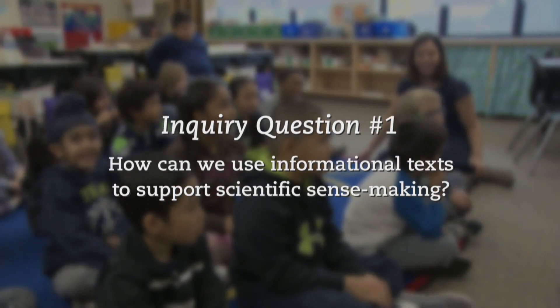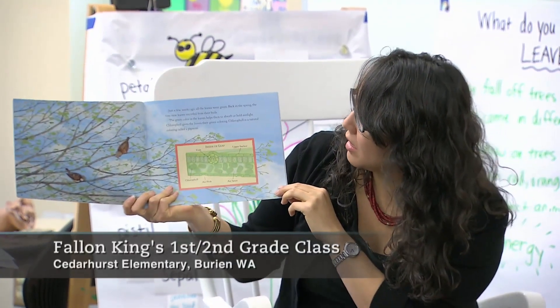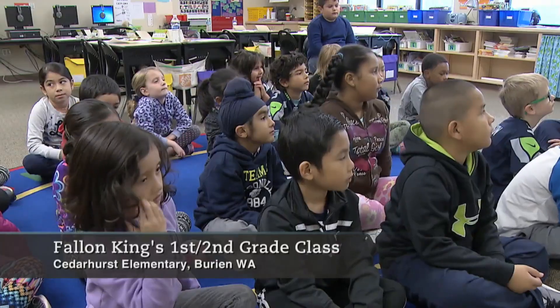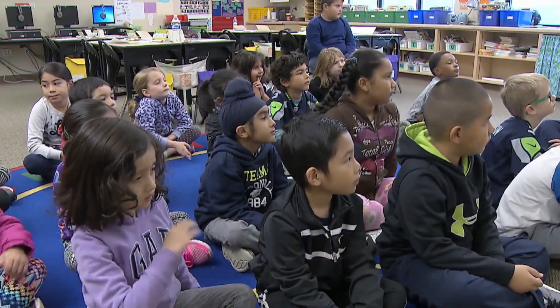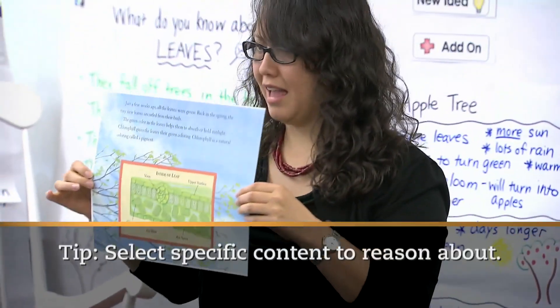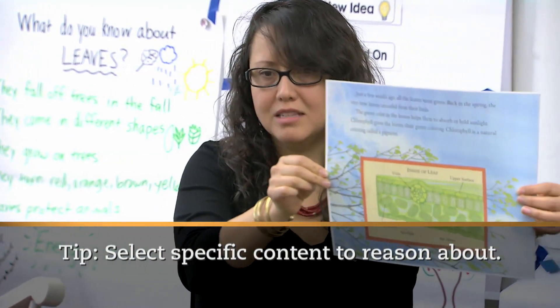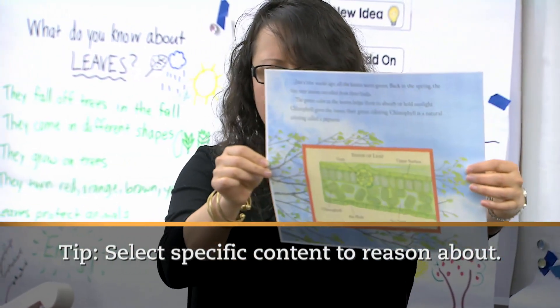Today we started with an interactive read aloud. Chlorophyll gives the leaves their green coloring. We shared just a piece of a book to talk to the kids about the importance of leaves and how they are structured to give the tree energy and make food. This is what the inside of a leaf looks like. Every single leaf on the apple tree has this inside of it — is that amazing?